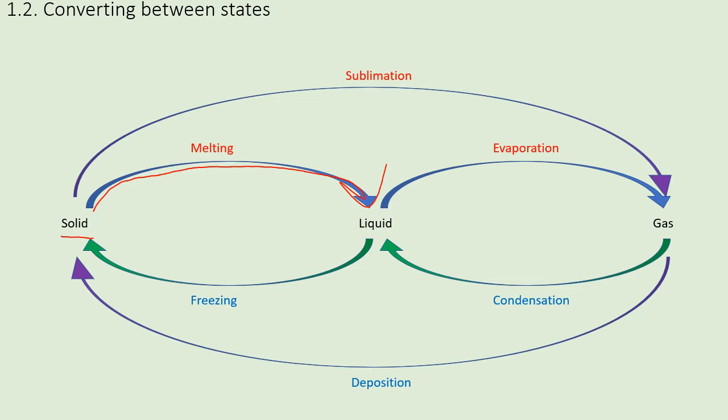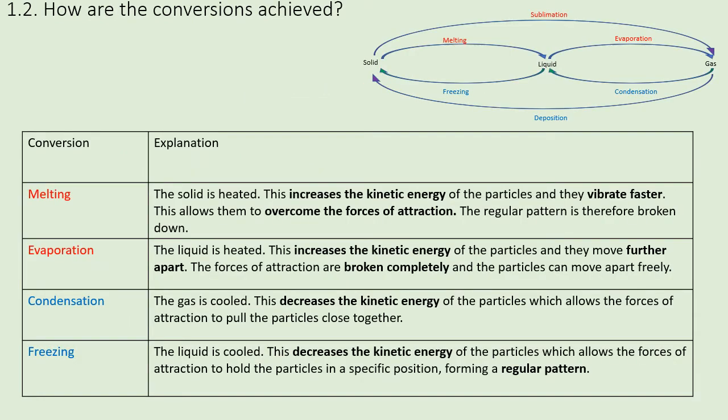So for the same specification point, 1.2, we need to know the names of the conversions, but also how they're achieved in terms of the kinetic energy, the forces of attraction, and the vibrations and movement of the particles. So we don't really need to worry about sublimation and deposition. That's beyond the scope of our study at this point. So we'll go through melting, evaporation, condensation, and freezing. So we'll start with melting. Melting is in red because it requires heat. So you heat a solid, which increases the kinetic energy, so those particles start moving faster and faster, and as they vibrate faster, they eventually overcome the forces of attraction between them, which breaks the regular pattern that we saw in the structure of the solid.